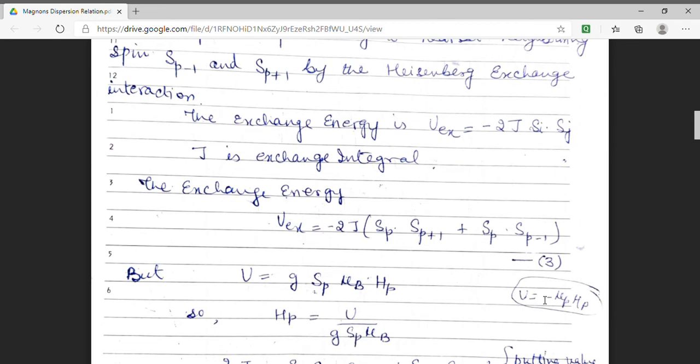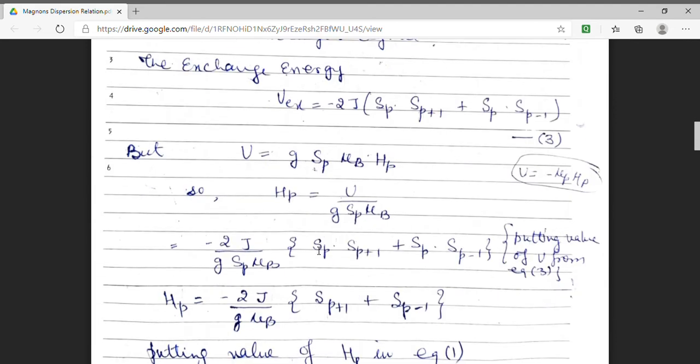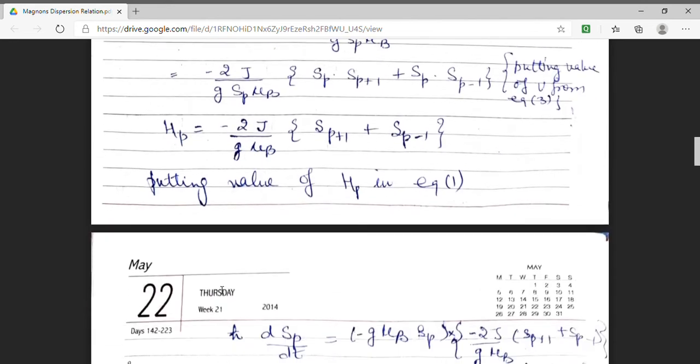But, energy can also be expressed as g sp mu b hp. From here, I am finding the value of hp. hp is the effective magnetic field that acts on the spin. Finding the hp and substituting the value of u which I have already determined. So, I am going to find, I get my expression of hp to be minus 2j upon g mu b sp plus 1 plus sp minus 1.